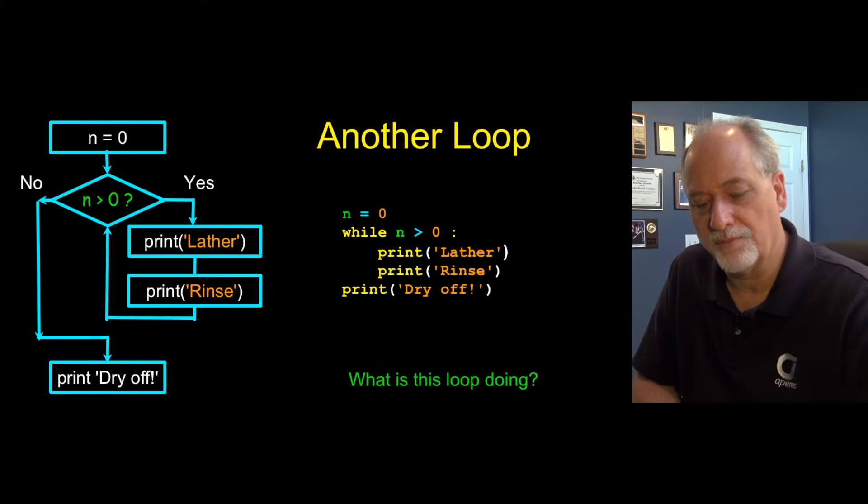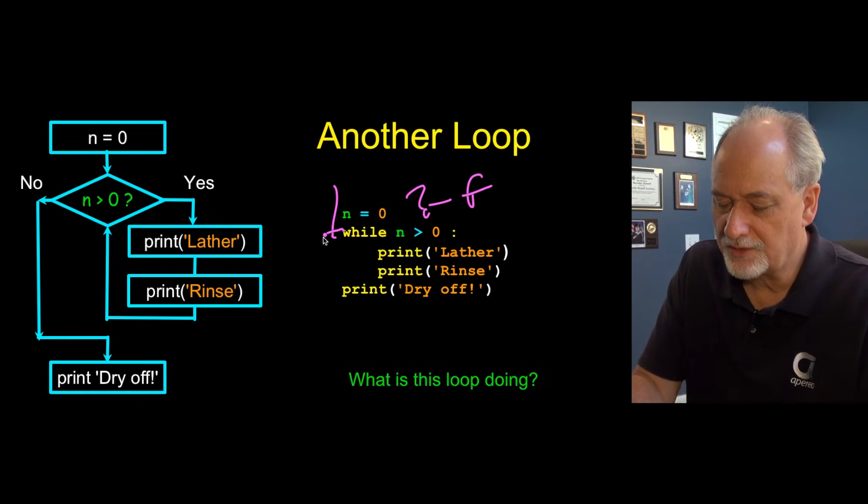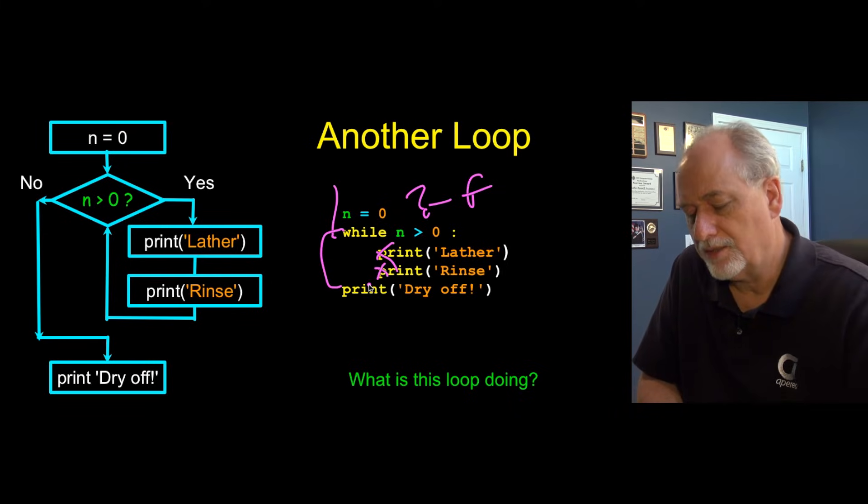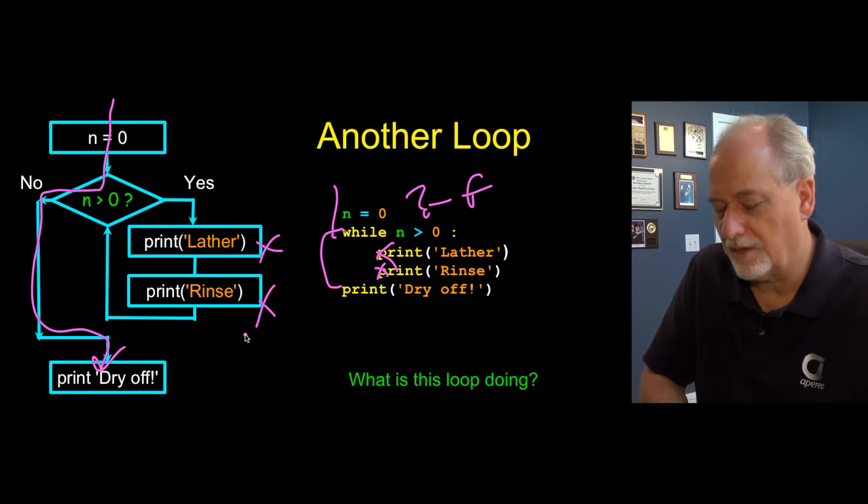Now here's a different loop. And so this one demonstrates a different idea. So in this case, we start out with n is zero and it comes in here. And is n greater than zero? Question mark. And the answer is false. So it skips it. It doesn't run these lines of code at all. And so this loop doesn't run at all because it comes in, asks the question, it says no, and then it skips right around it. So never run.